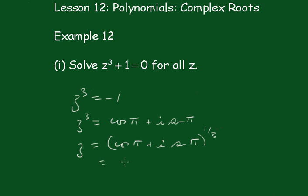And using De Moivre's theorem, we get that's the cos of pi upon 3 plus i sine pi upon 3, or if you like, the cis of pi upon 3.